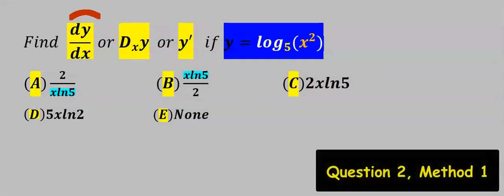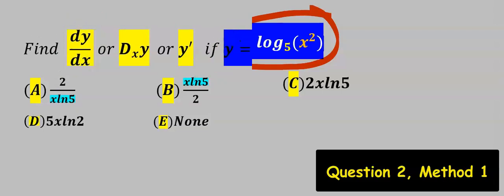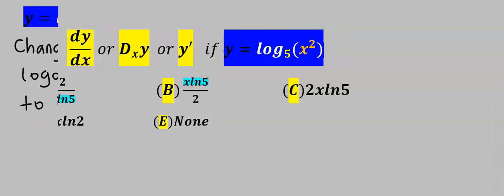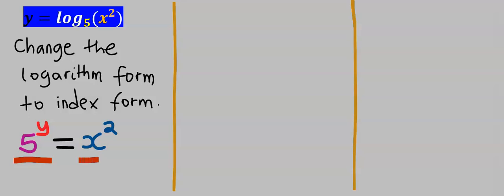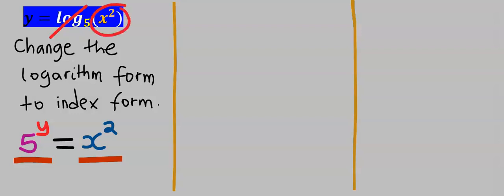Next, let's find the derivative of this function. To solve this problem, step number 1: change the log form to index form. We are going to have 5 to the power of y equals x squared. That is, the 5 at the base — we lift y up, the log will cancel out, and x squared will be isolated.